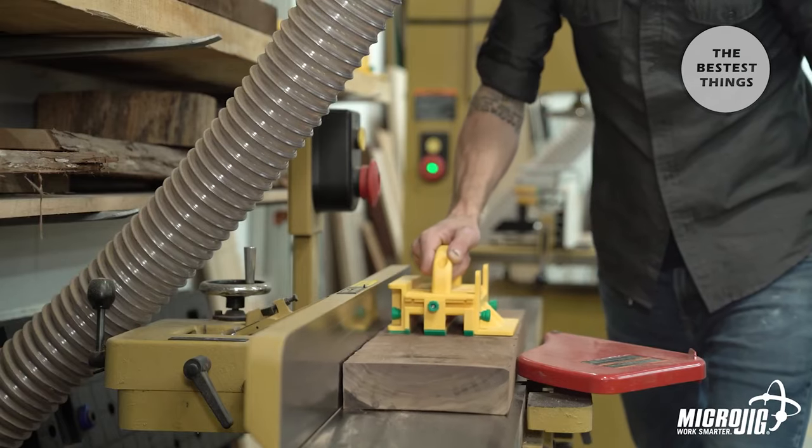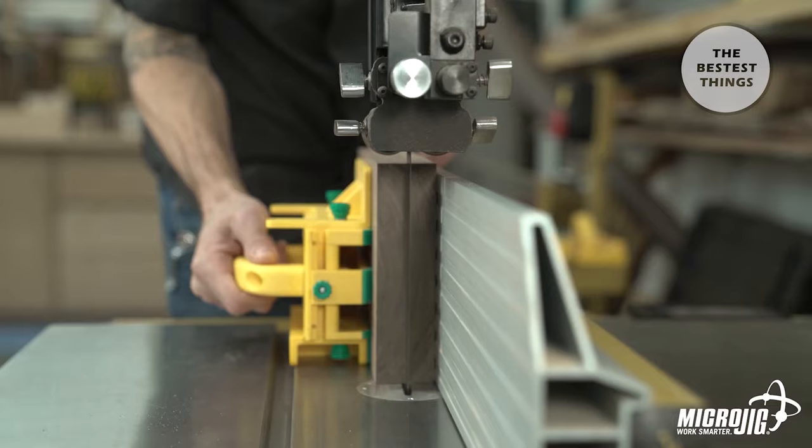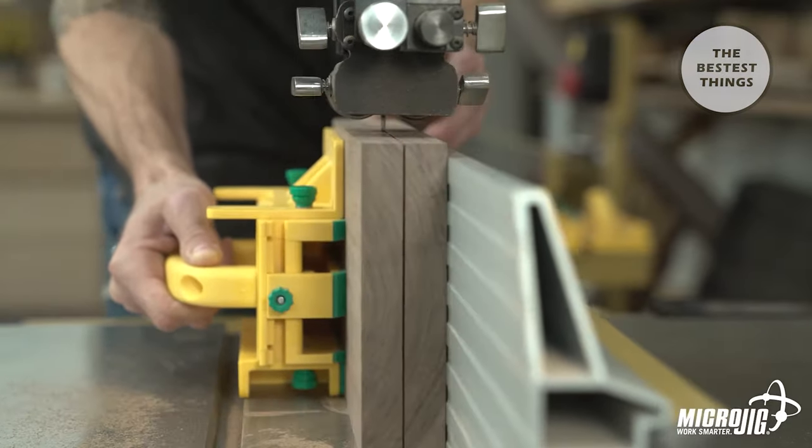Use it on the joiner for more traction when face joining. You can also use it on the bandsaw for better traction and a more comfortable grip when resawing material.